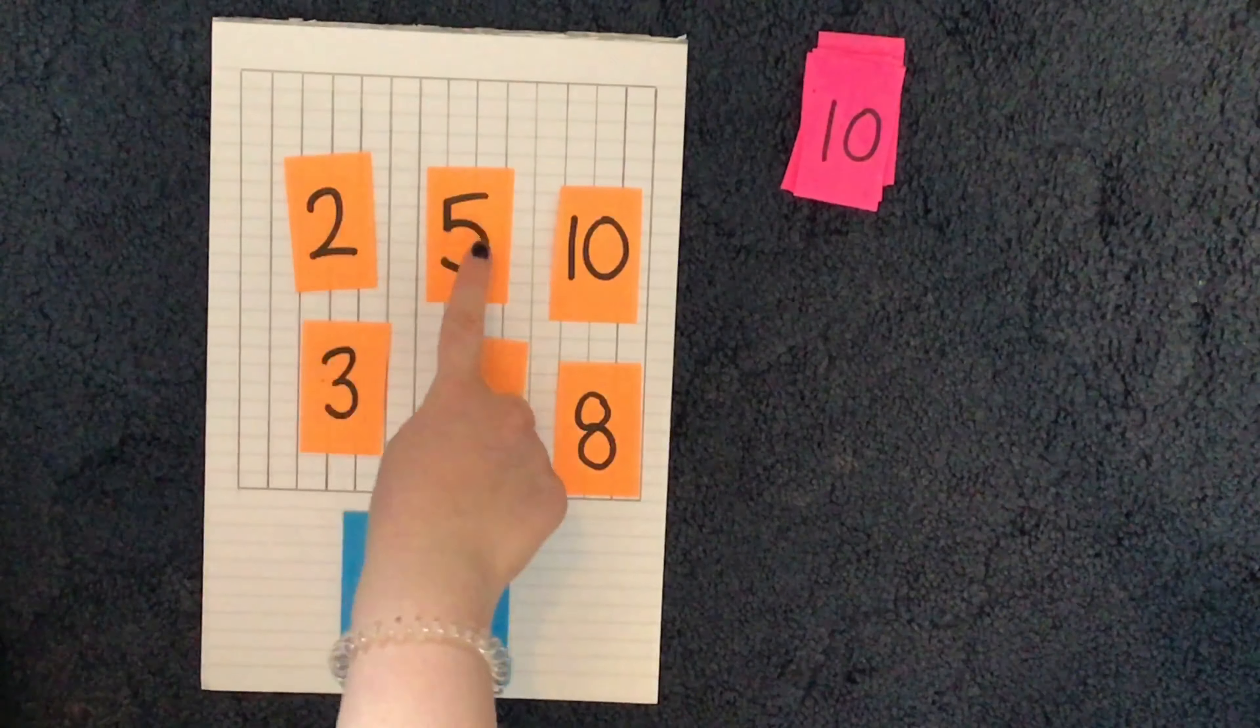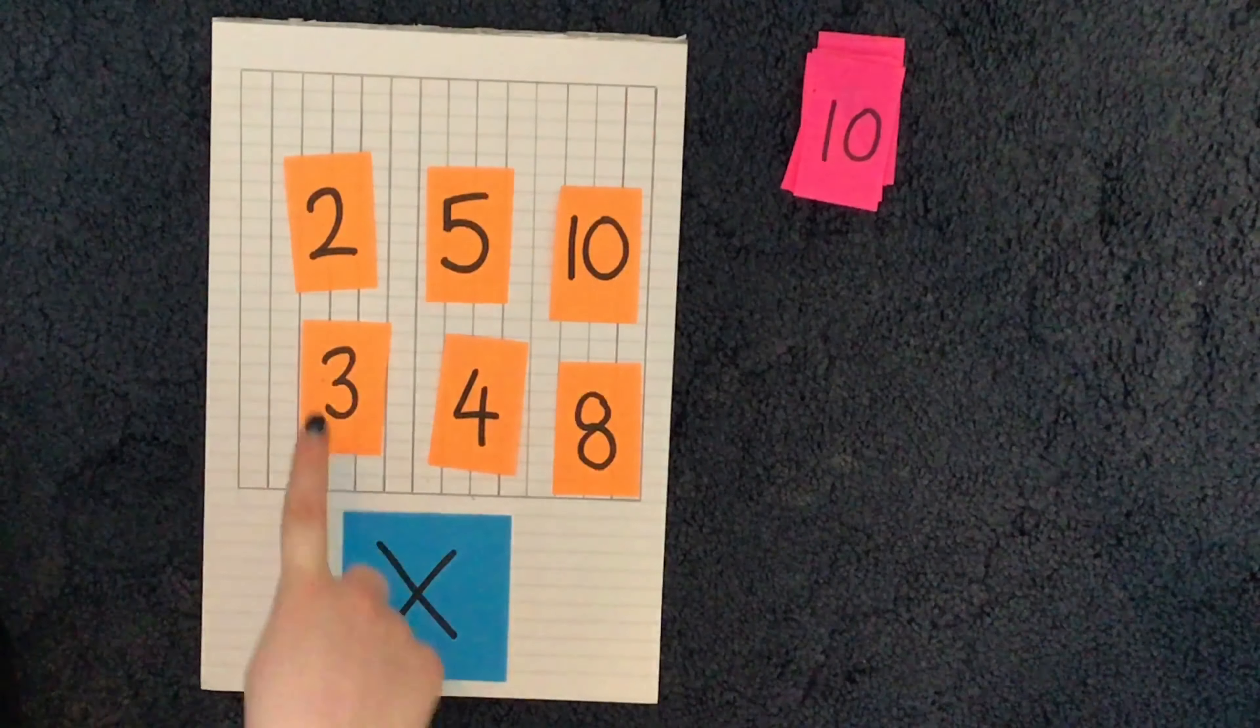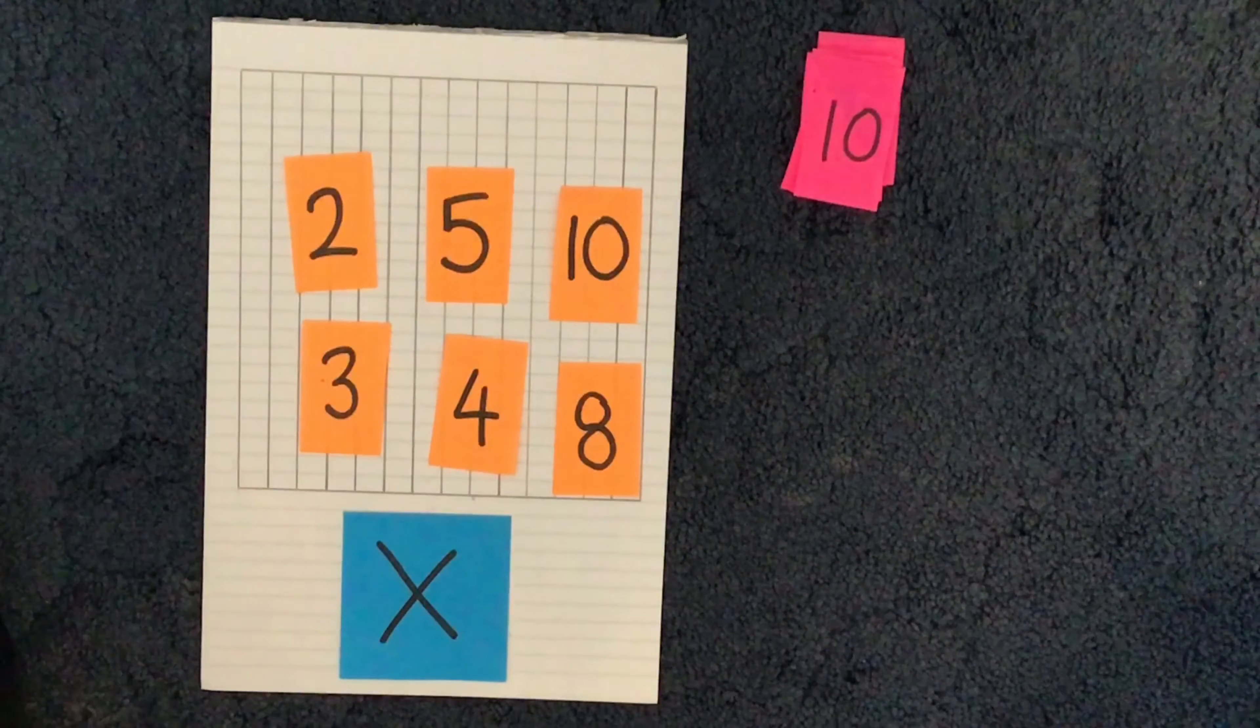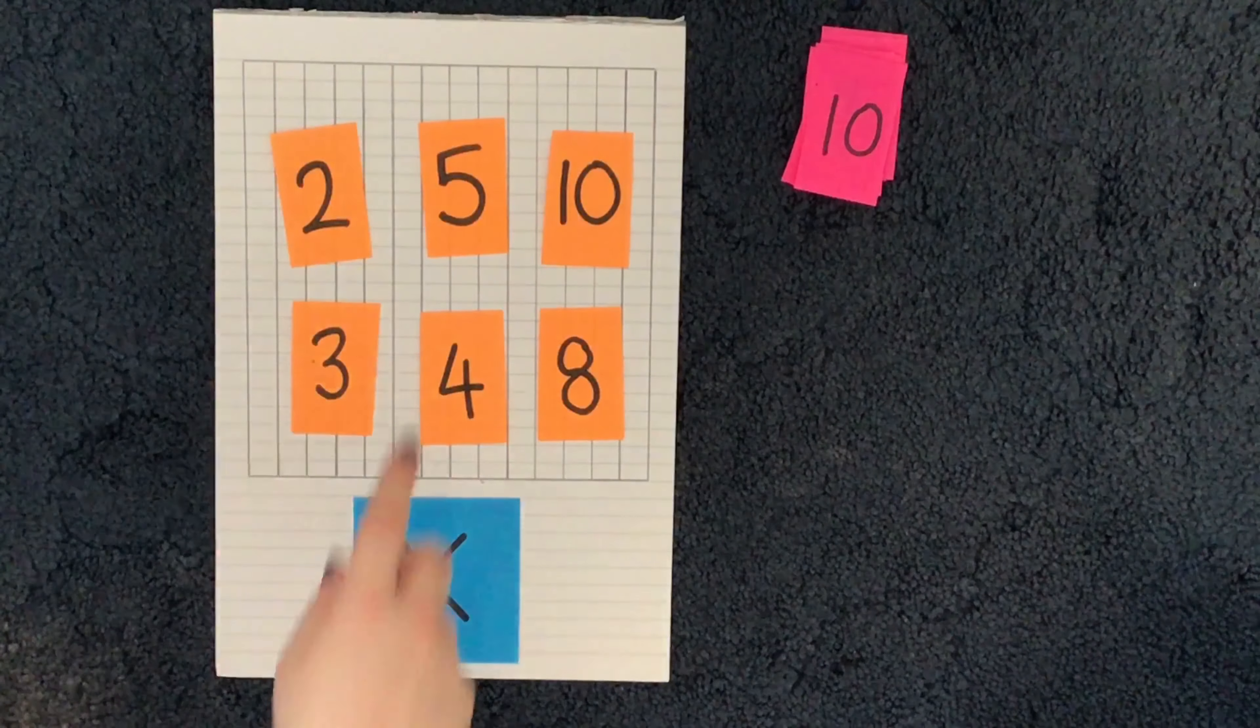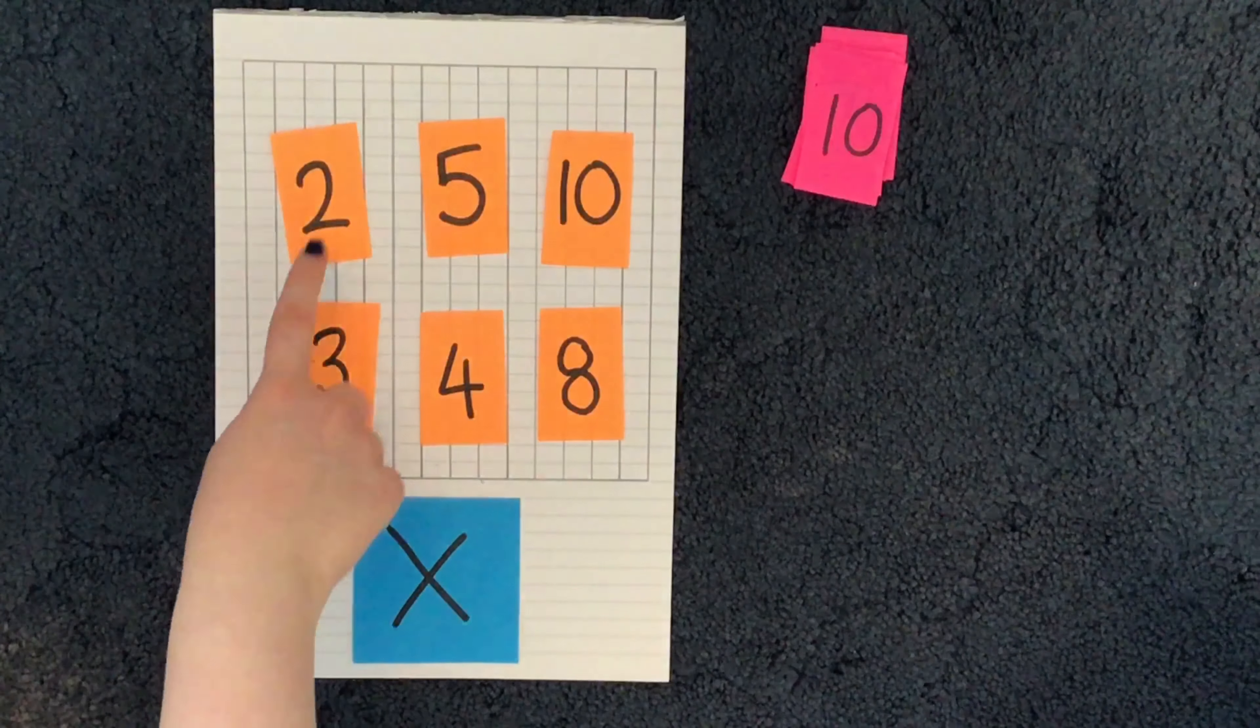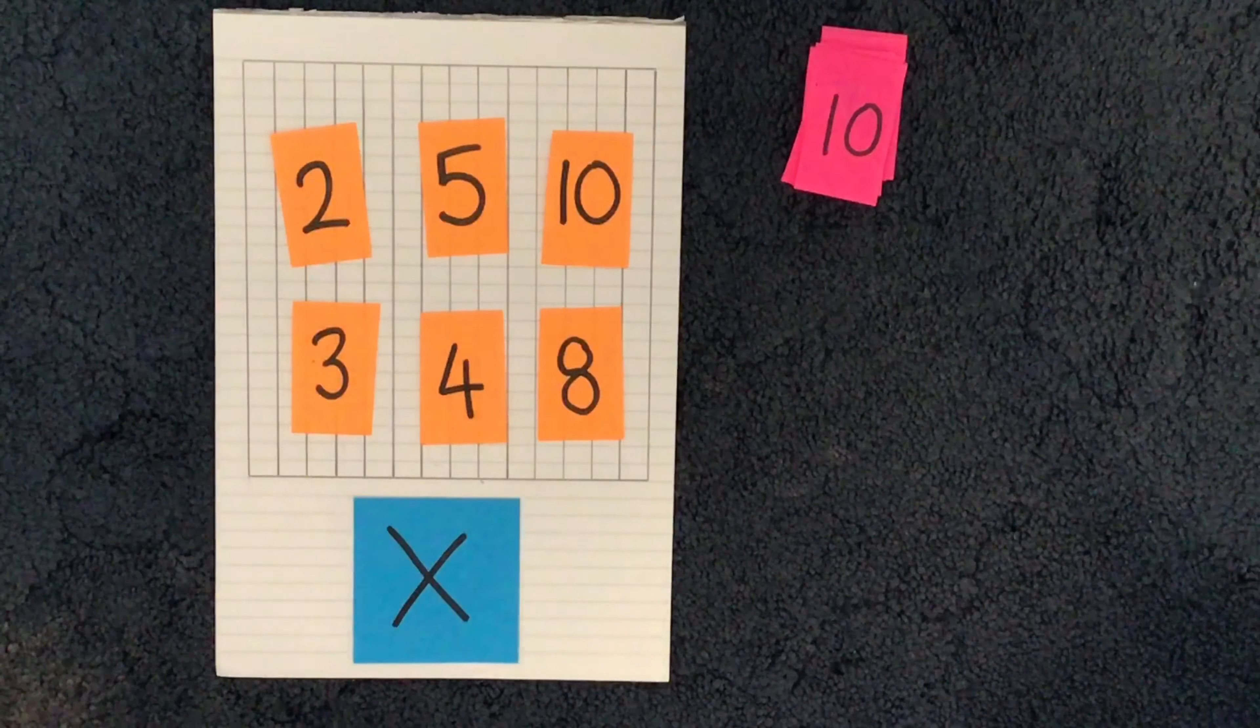So the 2, 5, and 10 times tables are the times tables that you would have been learning and practicing while you were in year 2. The 3, 4, and 8 times tables are the times tables that you would have been learning and practicing during your time in year 3. Now, if you're somebody who's still a little bit wobbly on their 2, 5, and 10 times tables, then just use these for the activity. If you are somebody who feels confident on those times tables that you did in year 2, then I would advise you to use all of these cards for this activity.